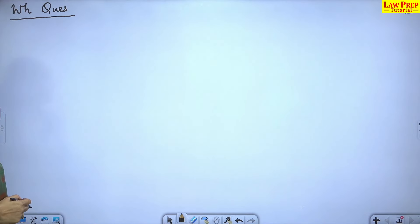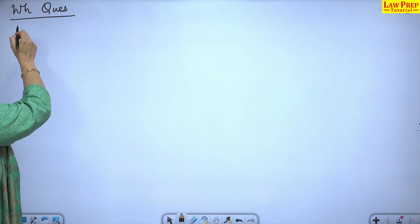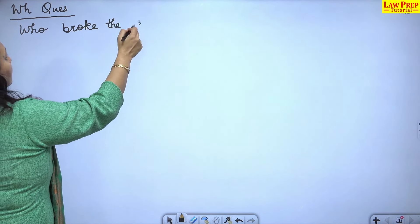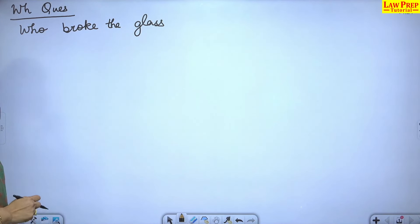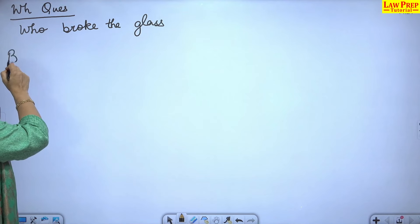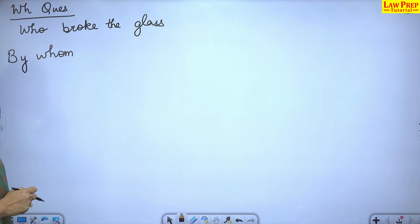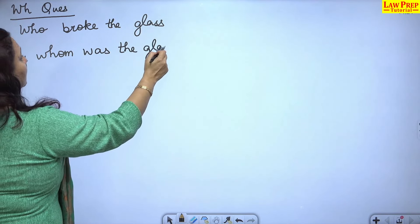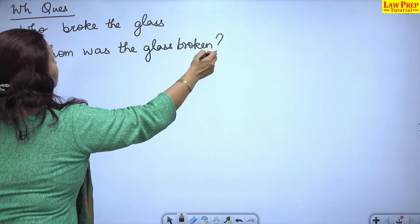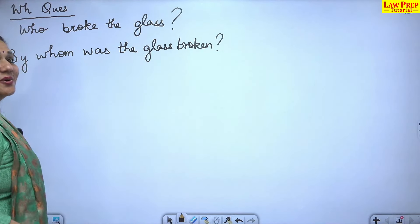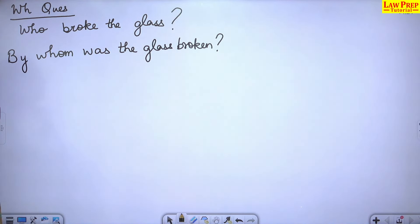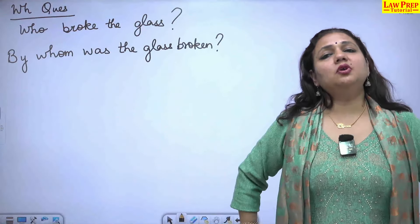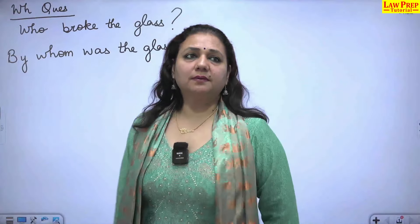For WH questions: 'Who broke the glass?' — tense is past, so we use 'was/were.' 'Who' changes to 'by whom.' The answer is: 'By whom was the glass broken?' Don't forget the question mark, because in objective choice questions, if a choice doesn't have a question mark, you should not mark it as the answer.